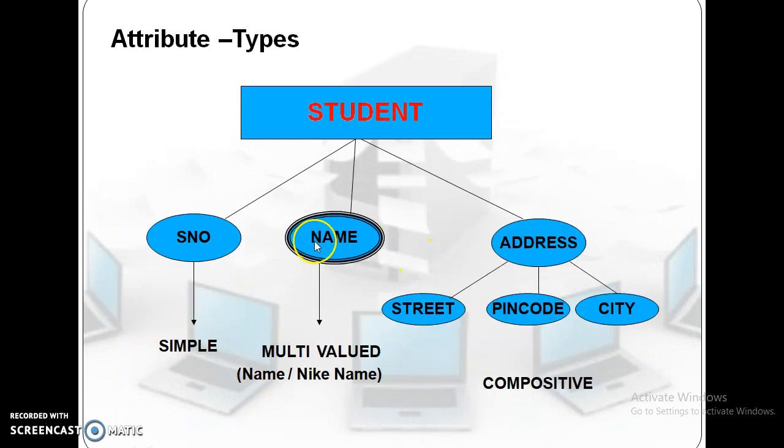Next, different types of attribute. This is called a simple attribute. There is a multi-valued attribute. Multi-valued attributes can have multiple names. The multi-valued attribute is identified with double ellipse line.